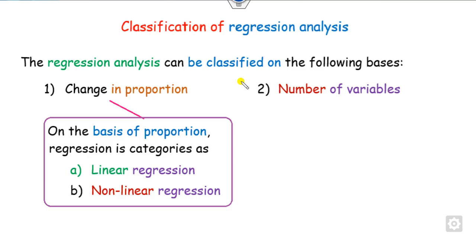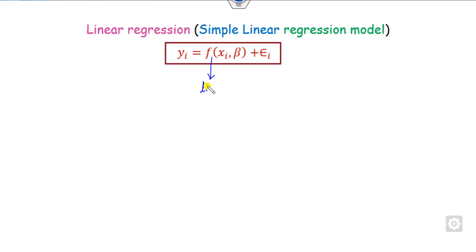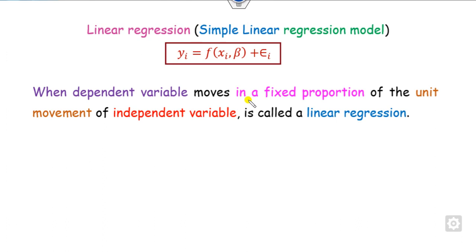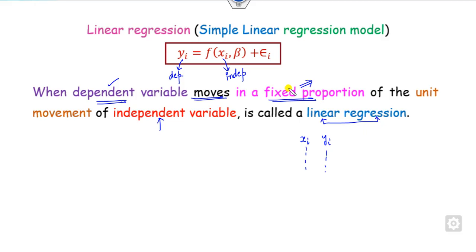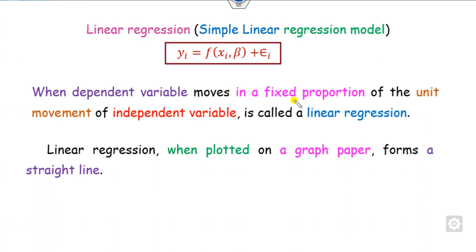Based on the general model f(x, β), we can define linear and non-linear regression. A relationship is called linear when the dependent variable y_i moves in a fixed proportion of the independent variable x_i. This is called simple linear regression. When plotted, it produces a straight line.